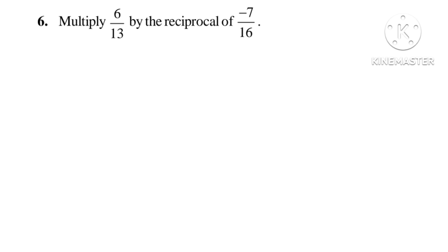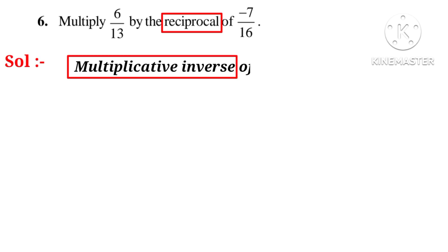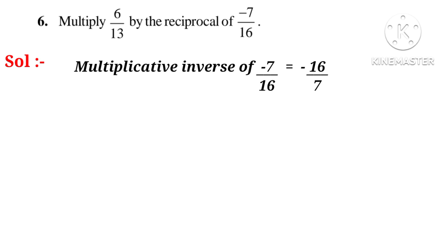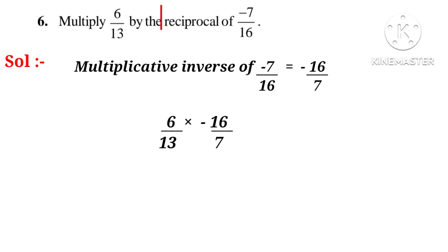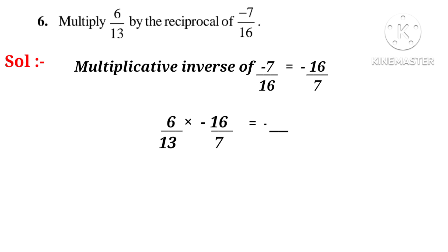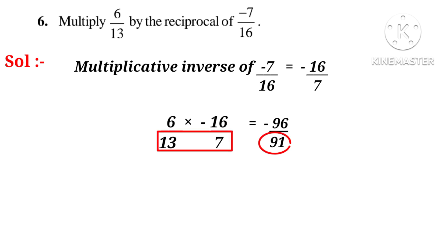Now let us do problem number 6: multiply 6 by 13 by the reciprocal of minus 7 by 16. The word reciprocal means multiplicative inverse. The multiplicative inverse of minus 7 by 16 is minus 16 by 7. So let us write 6 by 13 into minus 16 by 7. Multiplying numerator 6 by 16 gives minus 96, and denominator 13 by 7 gives 91. So minus 96 by 91 is the answer.